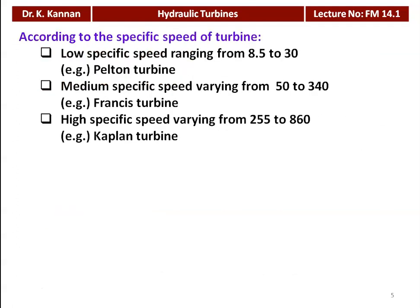According to the specific speed of the turbine — specific speed is an important design parameter. Low specific speed ranging from 8.5 to 30: we use the Pelton turbine. Medium specific speed varying from 50 to 340: the Francis turbine is the example. High specific speed varying from 255 to 860: the Kaplan turbine is the example. You have to remember these numbers, as competitive examinations often ask you to match the specific speed range with the type of turbine.